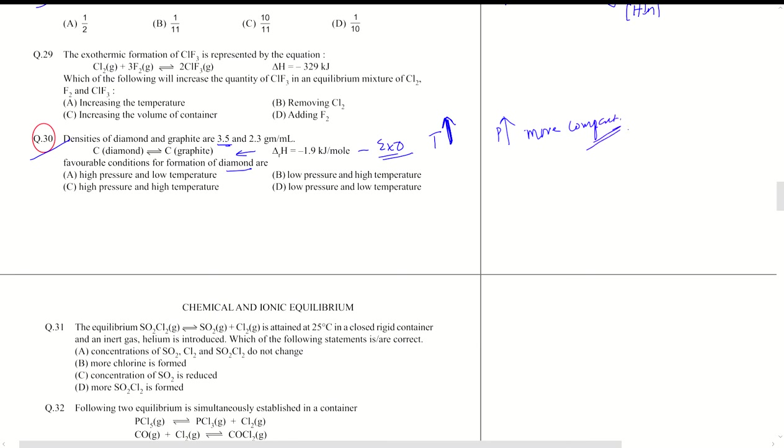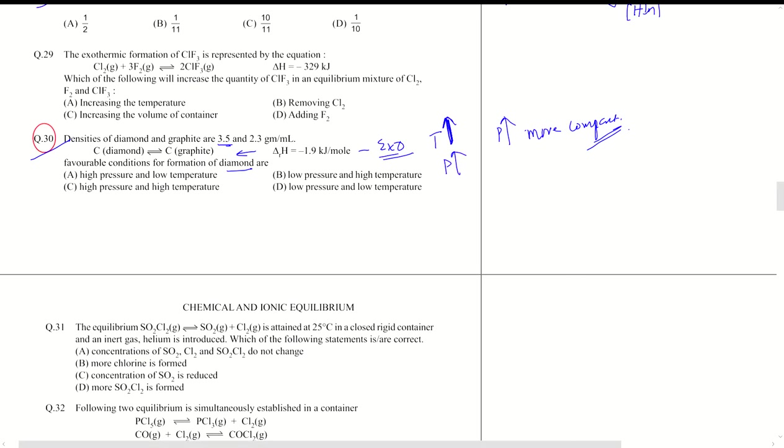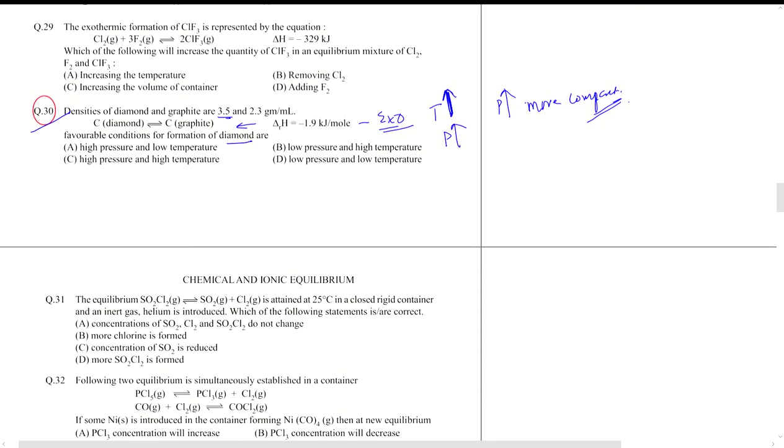Since you want a more compact form, which is diamond, you have to increase pressure as well. High pressure and high temperature will give you a backward direction and more diamond will be formed.